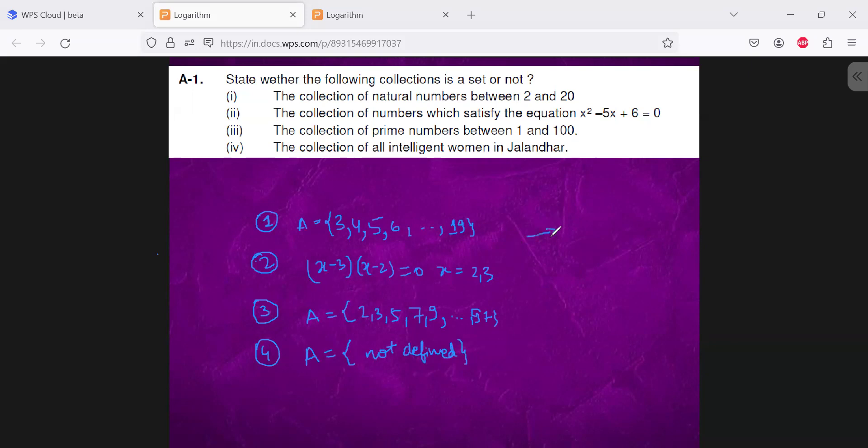So this is set. This is set. This is set. They have defined elements. This is set. And this is not set. So this is the solution of this.